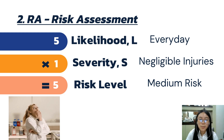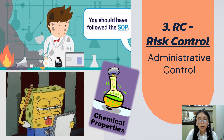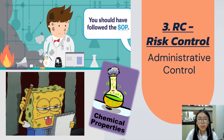The recommended control measure is Administrative Control. Laboratory workers need to understand the SOP of labs, plan the experiment procedures ahead, and survey the properties of chemicals that will be used to avoid the potential hazards.